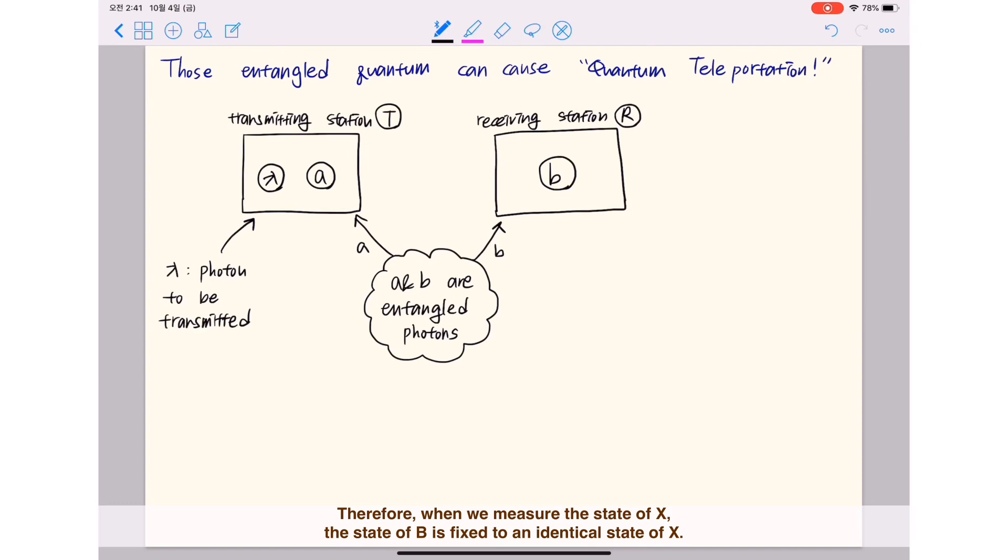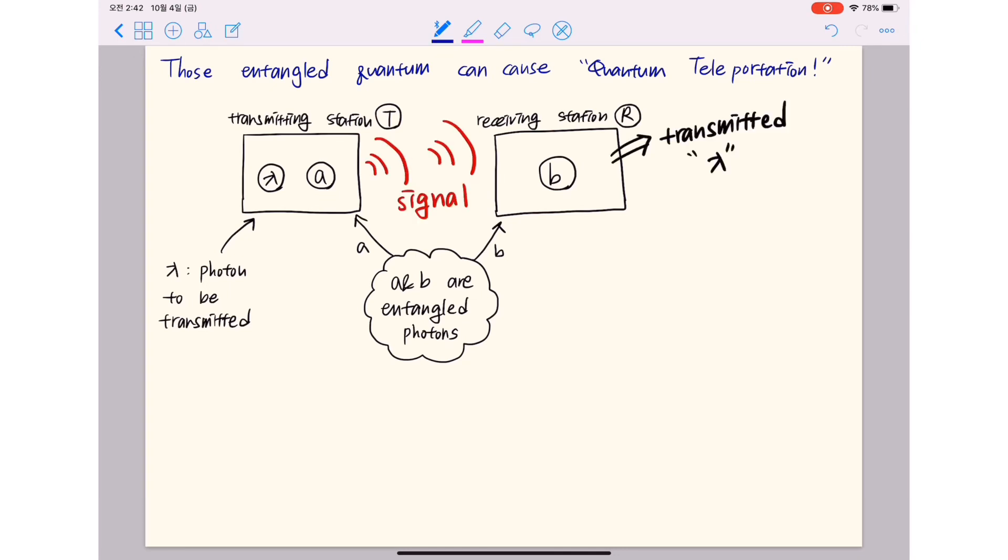Therefore, when you measure the state of X, the state of B is fixed to an identical state of X. That is, the properties of X is transferred to station R. This process is called teleportation.